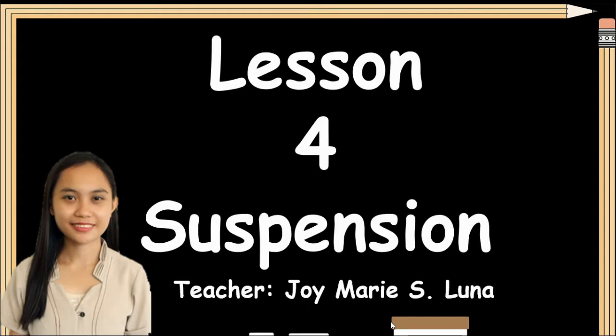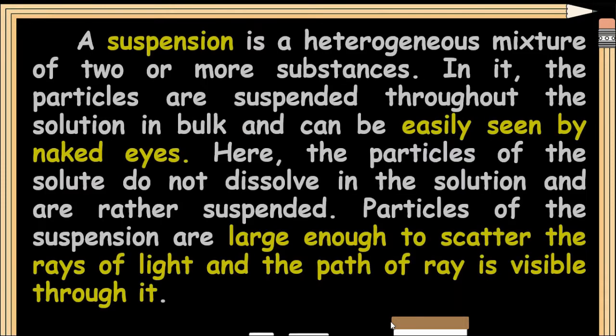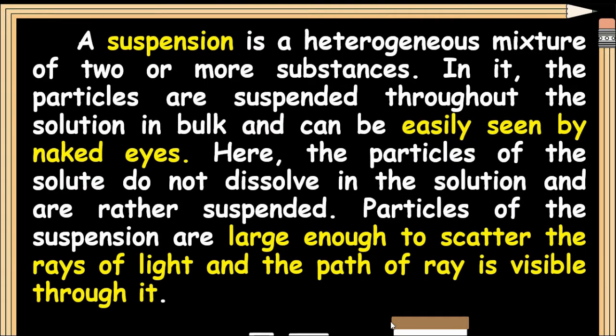Lesson 4: Suspension. A suspension is a heterogeneous mixture of two or more substances. In it, the particles are suspended throughout the solution in bulk and can easily be seen by the naked eye. The particles of the solute do not dissolve in the solution and are rather suspended. Particles of the suspension are large enough to scatter the rays of light, making the path of rays visible through it.